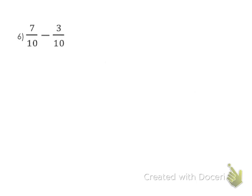We have a common denominator, so we don't need to do anything there. We are simply rewriting the problem with subtraction in the numerator, 7 minus 3, all over 10.